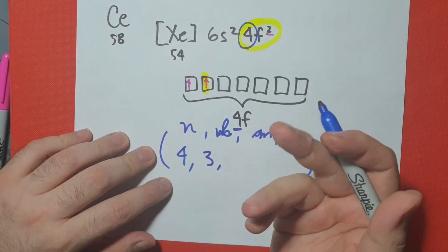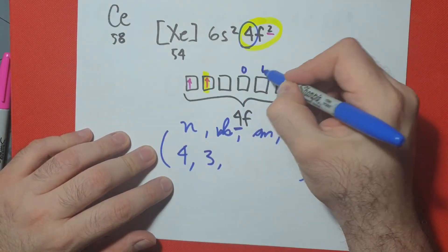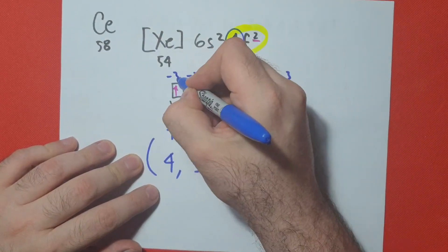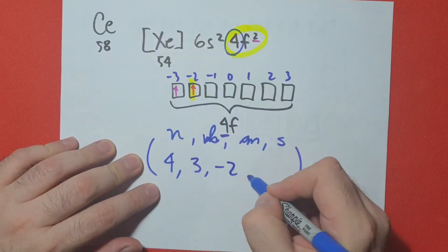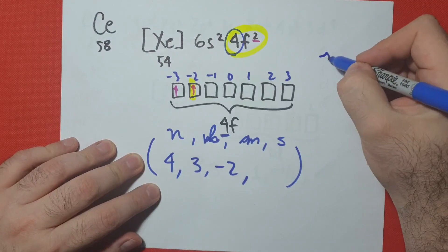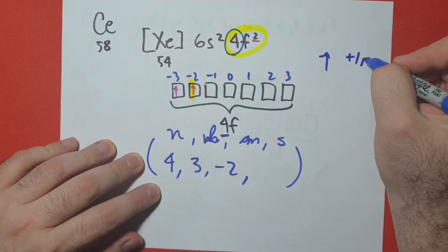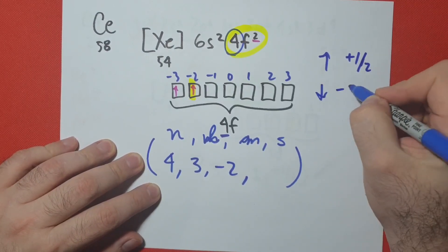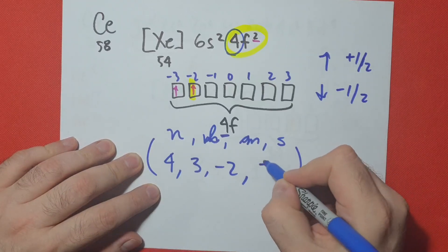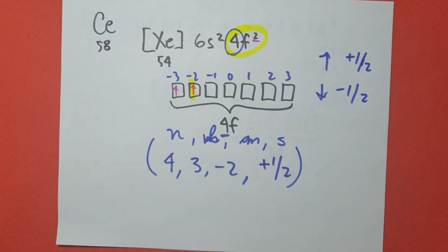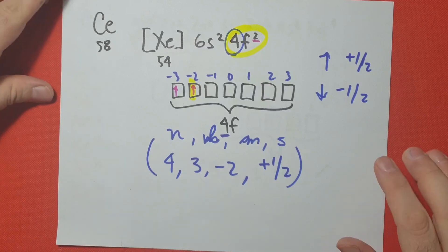Now, in what box did we end up on? 0 is the middle. 1, 2, 3. Negative 1, negative 2, negative 3. We're in box negative 2. And last but not least, up or down? Up is plus 1 half. And down is minus 1 half. So plus 1 half. So I hope with these exercises it's a little bit more clear what you guys have to do. And if you have questions, write a comment.